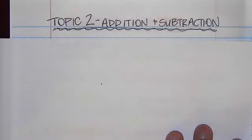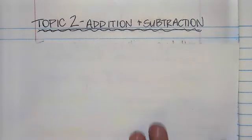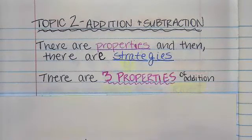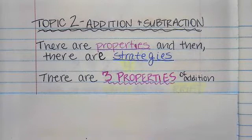Here are our notes for the first part of topic two, addition and subtraction. There are properties and then there are strategies. There are two different things, properties and strategies. There are three properties of addition I showed you before. There is the commutative, the associative, and the identity.